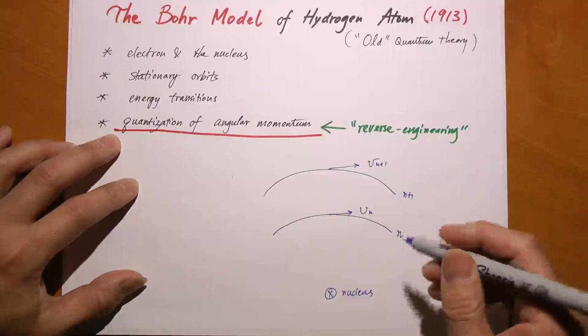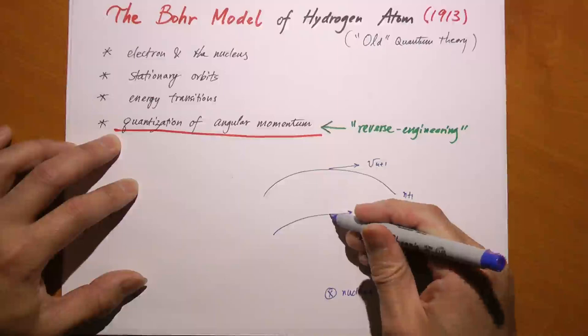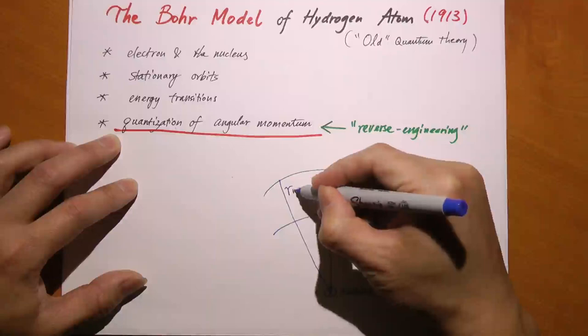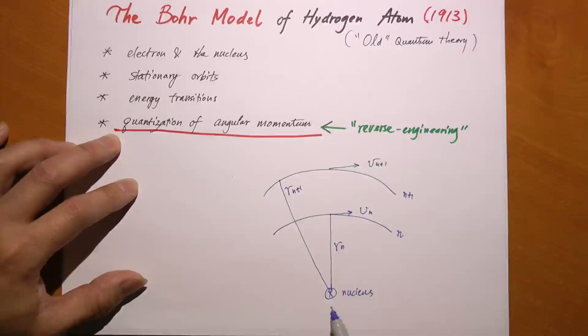These orbitals—here I drew one orbital, here I drew another—have distances r sub n and r sub n plus 1. The electron can be in any one of these orbitals, and the further away from the nucleus, the greater the energy of this electron, because the force is attractive, so it corresponds to a negative potential.